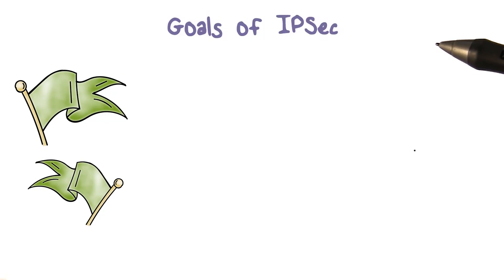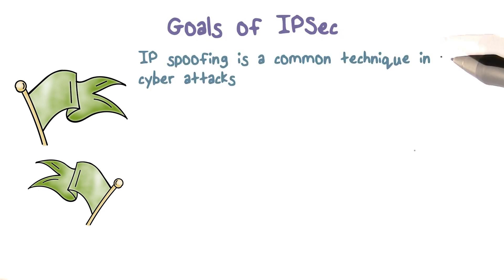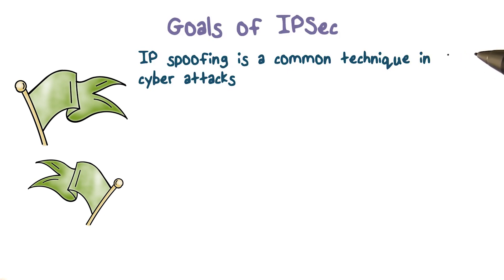To understand the goals of IPsec, let's take a look at a critical weakness of IPv4. In IPv4, there's no authentication of the source IP address. That is, if Alice receives a packet with Bob's source IP address, Alice cannot be sure that the packet is really from Bob.